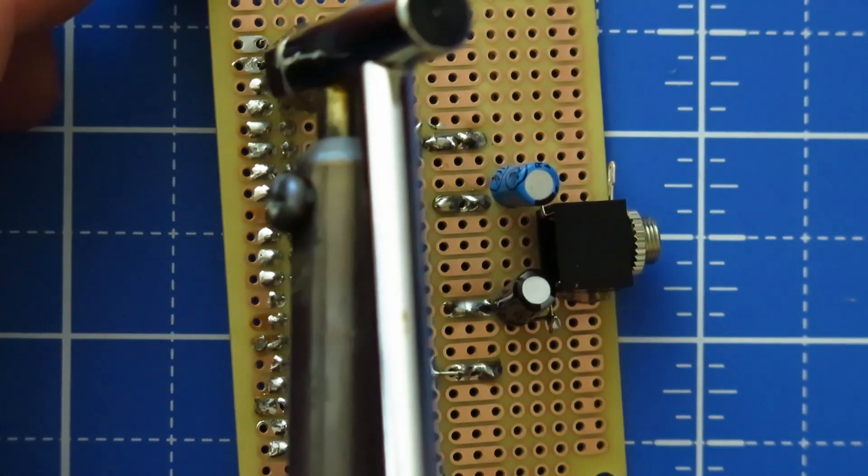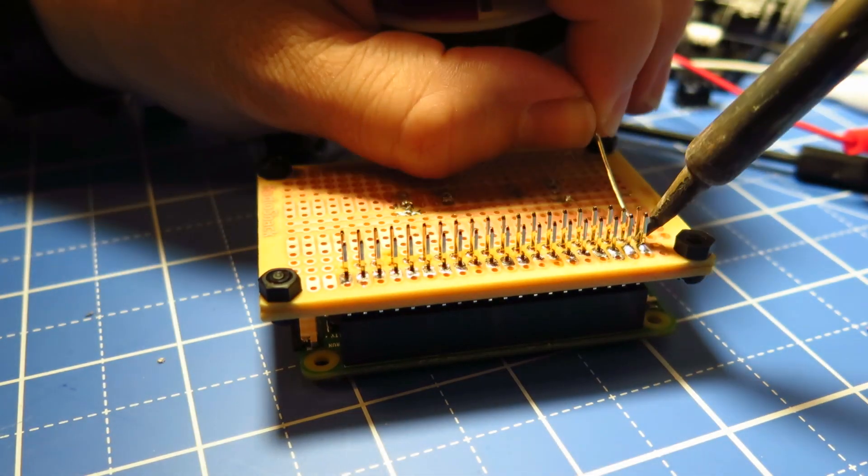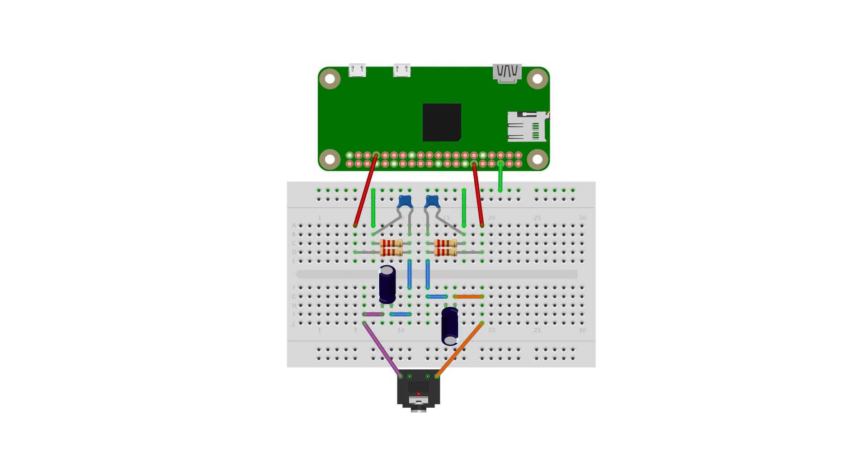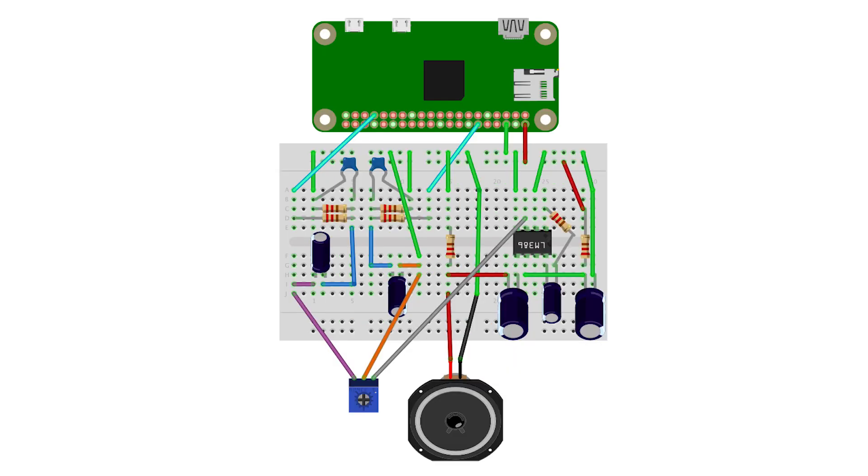So I essentially scrapped that, re-soldered the old parts onto a new breadboard, and then incorporated all the new parts into that same breadboard. And then I just connected the audio output from my last video circuit to the audio input of the op amp. Now power.